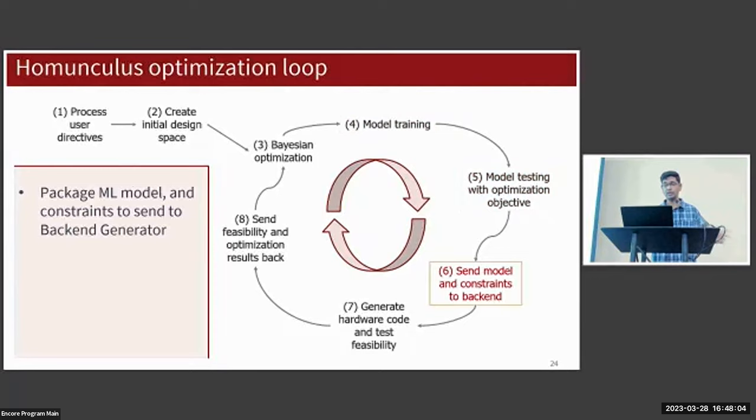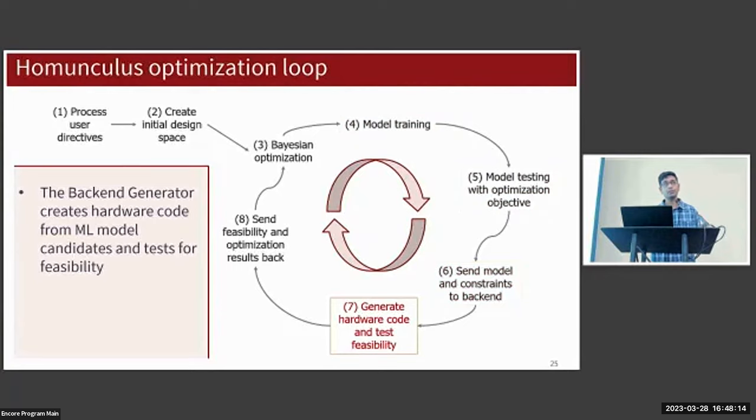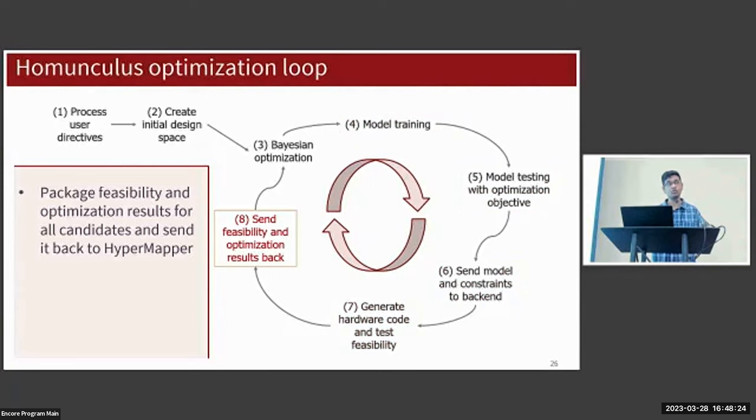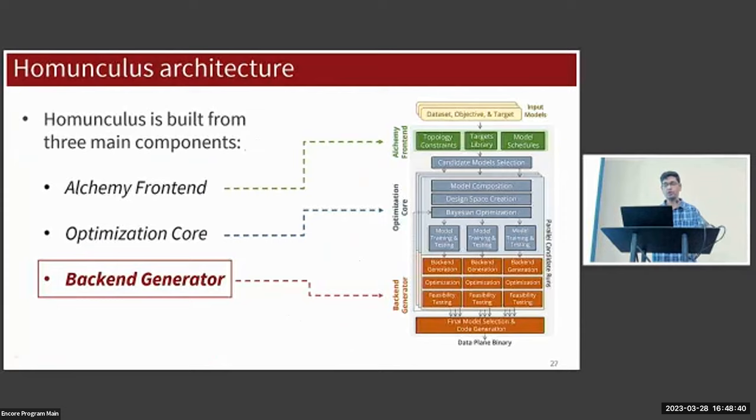After that we'll send the model and its constraints to the backend generator. I'll talk more about the backend generator in the next section, but this piece is essentially responsible for creating hardware code for the ML models. Once the hardware code for the ML models has been generated, they're going to be tested for performance and resource feasibility. Finally we're going to send the feasibility and optimization results back to Hyper Mapper, and this will inform future choices. We'll repeat this process over and over as long as needed, and over time Homunculus will produce better and better models.